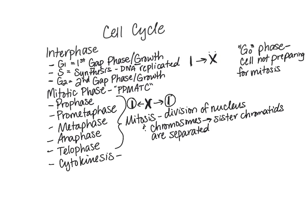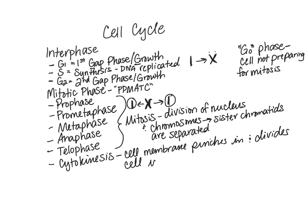In cytokinesis, the rest of the cell gets divided. The cell membrane pinches in and divides the original cell into two daughter cells. So PP through telophase divides the chromosomes and nucleus into two new nuclei, and then cytokinesis separates the cell into two separate cells, each containing a new nucleus.